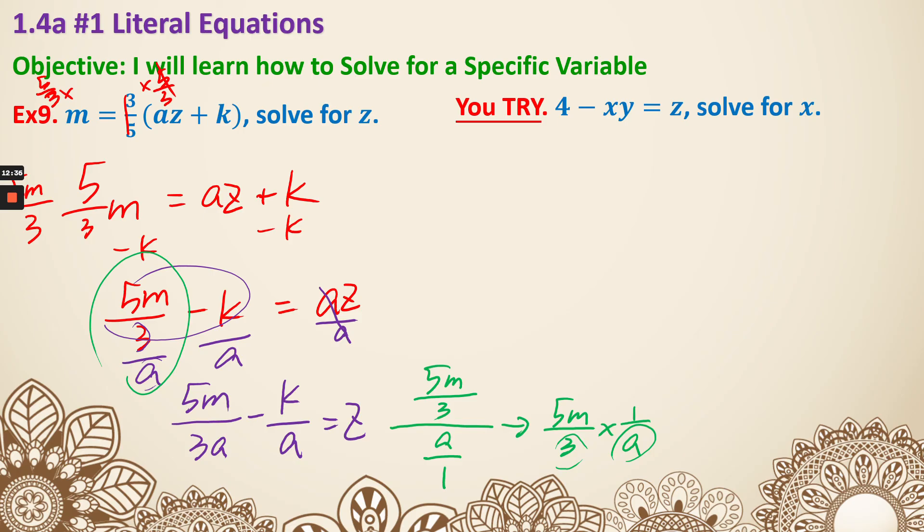Now last one, example 10. Solving for x, I'm going to get rid of the 4, so I'll move 4 to the other side. -xy = z - 4. Next, I'm going to need to get rid of the -y. So divide by -y every single thing.